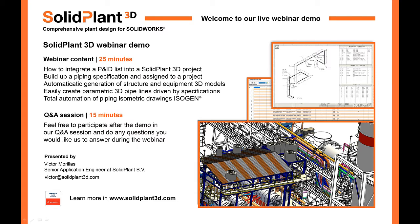Today we are going to see how to integrate a PNAD list from an Excel file into a SOLIDPLAN3D project, build up a pipeline specification and assign it to a project, create structure and equipment 3D models with our libraries, easily route parametric 3D pipelines driven by specifications, and finally generate piping isometric drawings with the standard de facto Isogen.